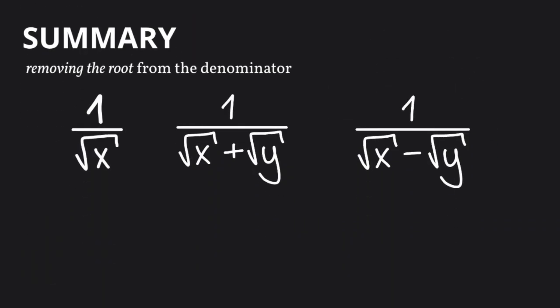Let's summarize what we learned today. Rationalizing the denominator is nothing else than removing the root from the denominator. In our first case, when we only have one square root, we take exactly that square root and multiply both the top and bottom by it.